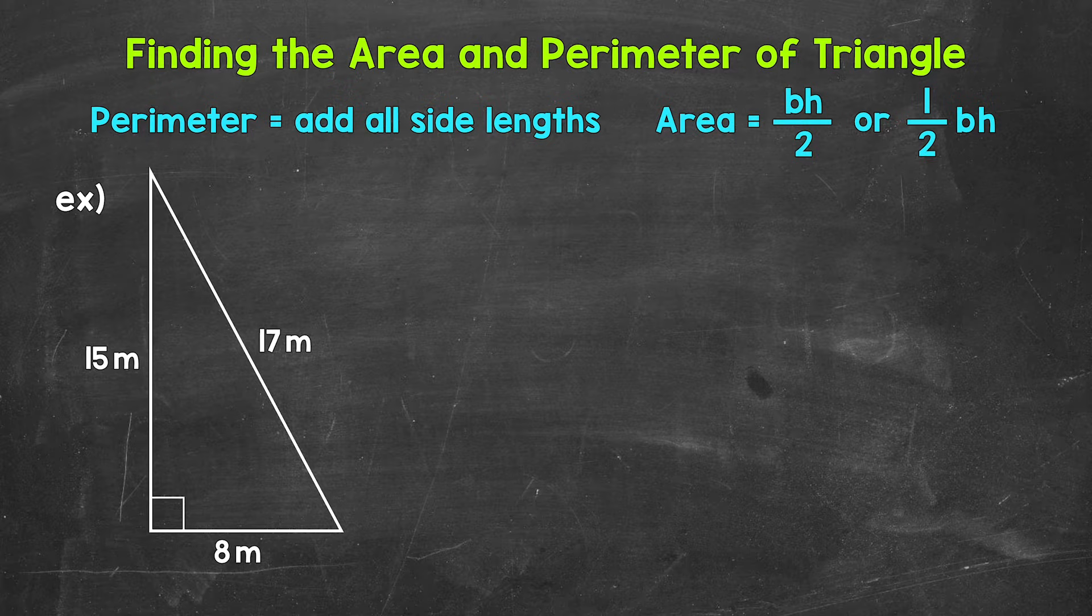Now remember, perimeter is the distance around the outside of a shape, and then area is the amount of space or surface something covers. For the perimeter, we need to add all of the side lengths.